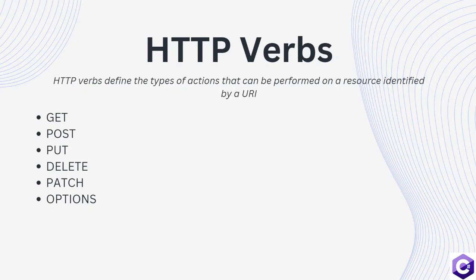Let's also understand HTTP verbs. HTTP verbs define the type of actions that can be performed on a resource identified by a URI. Some common examples of HTTP verbs are GET, POST, PUT, DELETE, PATCH, and OPTIONS. Out of these, the most common ones are GET, POST, PUT, and DELETE, and these are the ones that we are going to later implement in our web API.